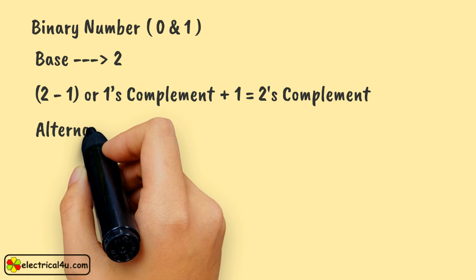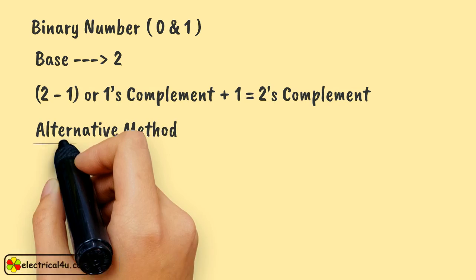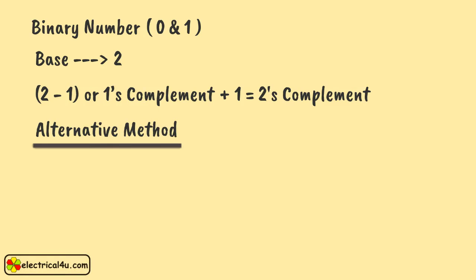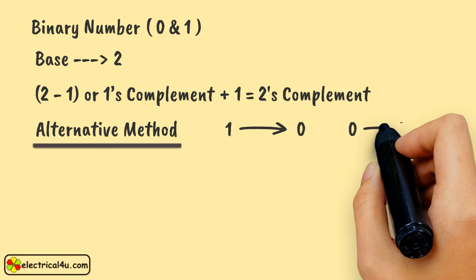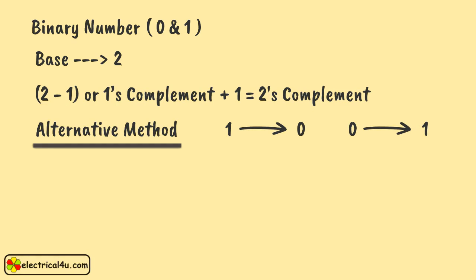However, luckily for us, there is another method of finding 1's complement. We do not have to remember all those steps to find out 1's and 2's complement, but a simple trick will do the job. Here, just we have to replace 1 by 0 and 0 by 1 to find out 1's complement. Adding 1 with that result will give us 2's complement.